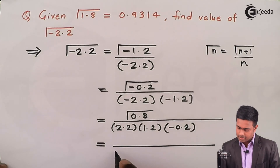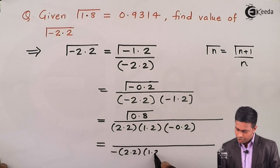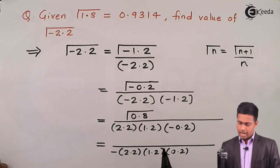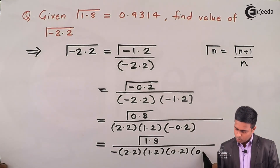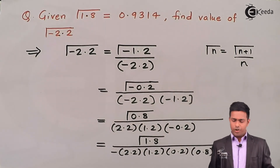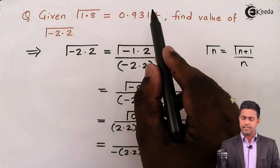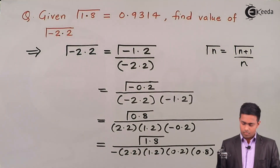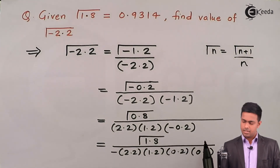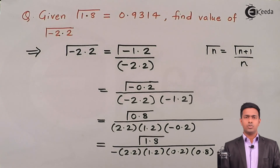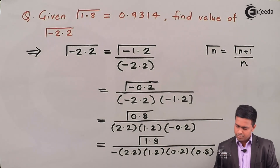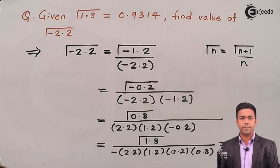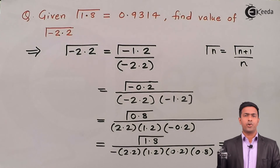Combining everything, the first three denominator values are (-2.2) * (-1.2) * (-0.2) * (0.8), and for gamma(0.8) we get gamma(1.8) / 0.8. We now know gamma(1.8) = 0.9314, so we substitute: gamma(-2.2) = 0.9314 / [(-2.2) * (-1.2) * (-0.2) * (0.8)]. Calculating this gives the answer gamma(-2.2) = -2.21.